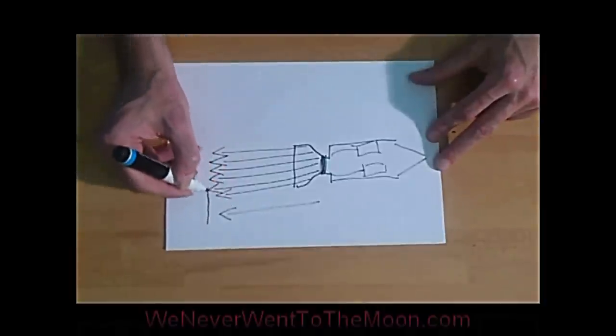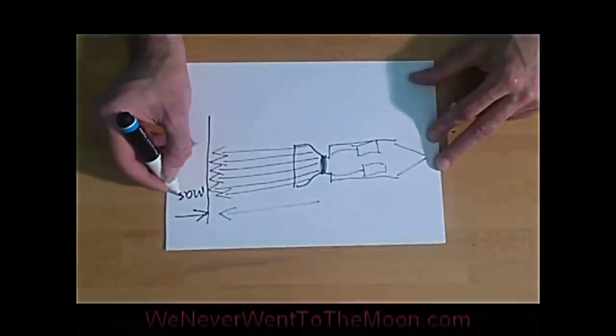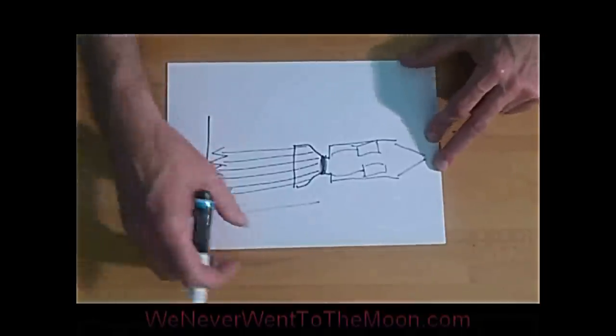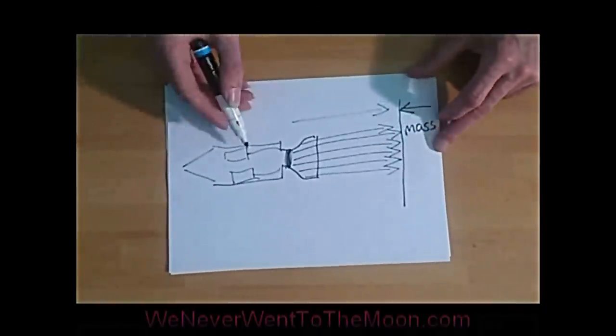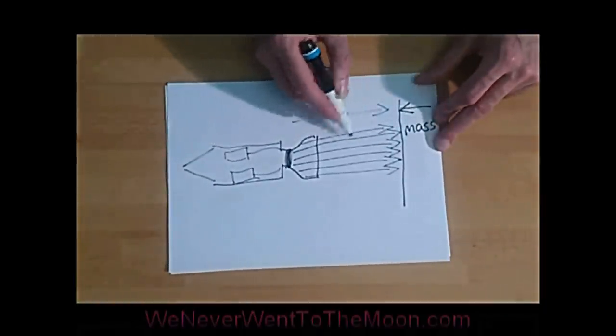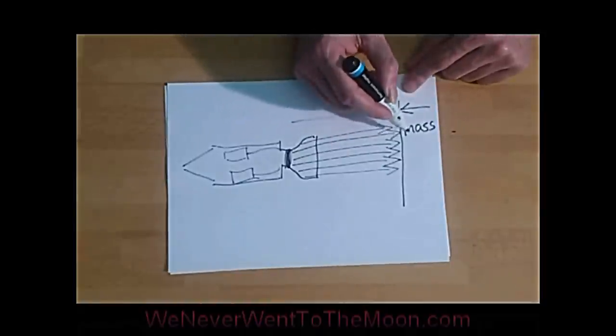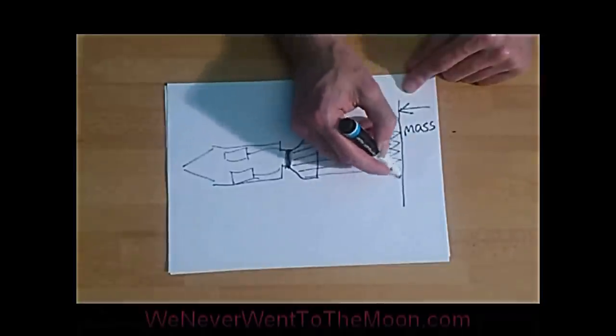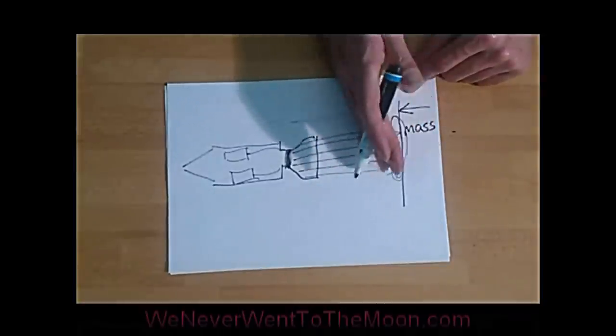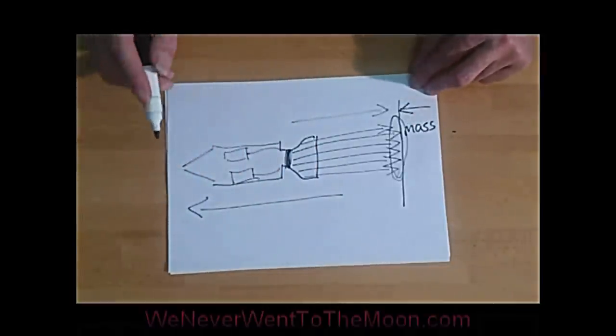Now what I think happens is that the action of this thrust force here causes a reaction by the mass that is behind the rocket. So the thrust force coming out the nozzle hits the mass and the mass gives an opposite and equal reaction that acts on the contact area here that pushes the rocket in this direction.